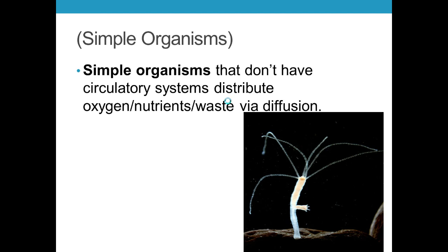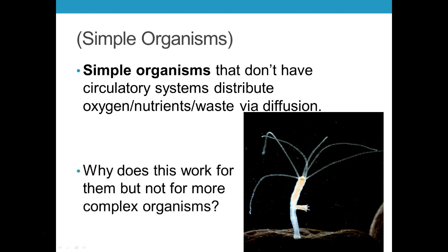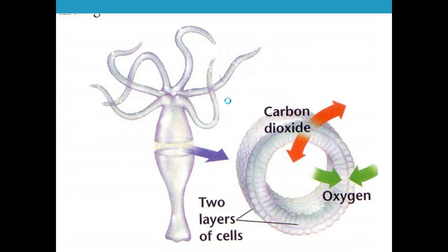Simple organisms that don't have a circulatory system have to use diffusion. This is a hydra — a little organism that lives in fresh water and is tiny, maybe a half inch or quarter inch tall. It needs oxygen and needs to get rid of carbon dioxide and other wastes, and it does that via diffusion. It's simple enough that it doesn't need a lot, and looking at the image, CO2 comes out and oxygen goes in by diffusion. This works because there are only two cell layers — an inner and an outer — so this organism can get all it needs by simple diffusion.